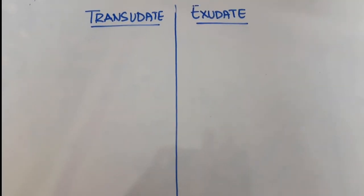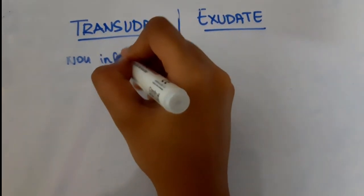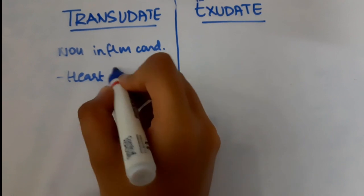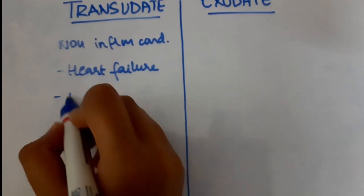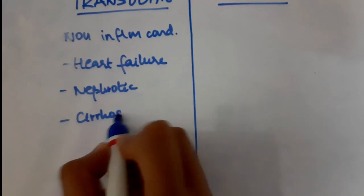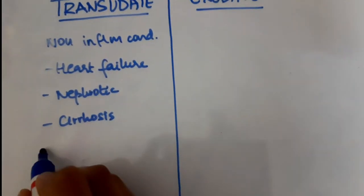Transudates are mostly seen in non-inflammatory conditions. These are conditions where there is either a stagnation of fluid or reduced oncotic pressure like heart failure, nephrotic syndrome, cirrhosis of liver and superior vena cava obstruction.